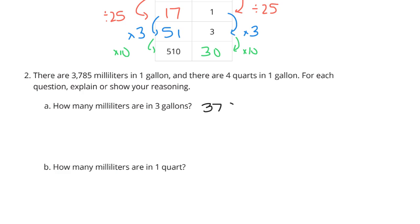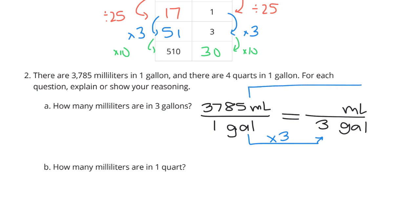Well, there's 3,785 milliliters in one gallon. And if we want to find out how many milliliters are in three gallons, we can ask ourselves, 1 to 3, we're multiplying by 3. And so, to make this equal, we'll then multiply the 3,785 by 3 and get a solution of 11,355 milliliters for the three gallons.